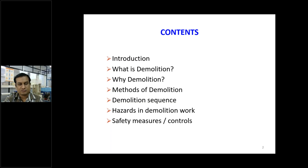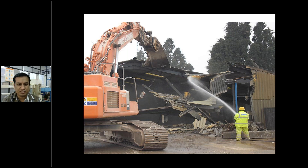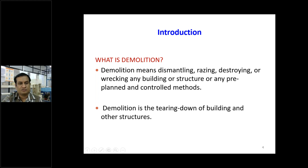From this photograph you can understand what exactly demolition is — we are observing this type of operation nowadays. To demolish, to wreck, to raze building structures, temporary structures or other construction works — that may be a bridge, that may be a chimney, that may be a tower — demolition is the operation where the razing, raking, or breaking of metal structures, cement structures or other construction material occurs. It means dismantling, razing, destroying, raking any building or structure by any pre-planned or controlled methods.